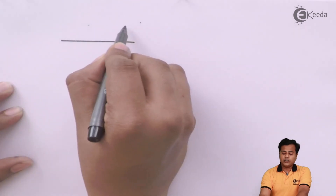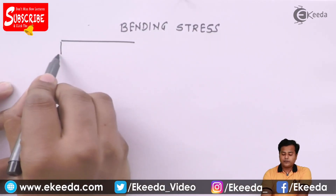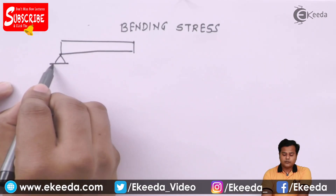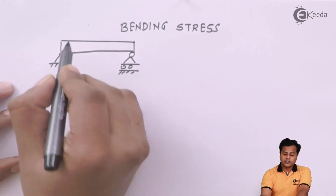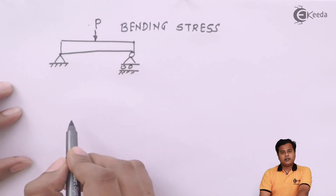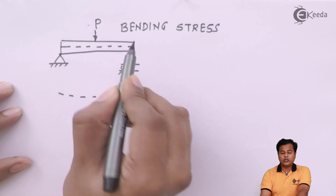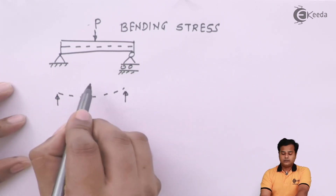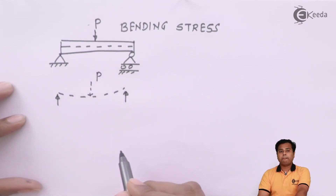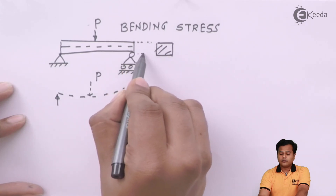Let us move ahead and look at bending stress. Whenever a beam — no matter what kind of support it has — is subjected to transverse loading, it deflects. When I say transverse loading, the force acts perpendicular to the beam's length. The neutral axis of the beam ultimately deflects under the action of force P. Looking at the cross section of the beam, we can analyze the stress distribution.